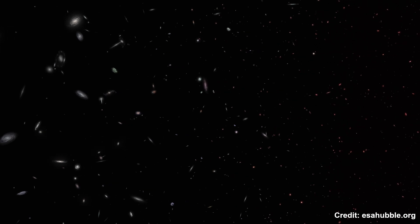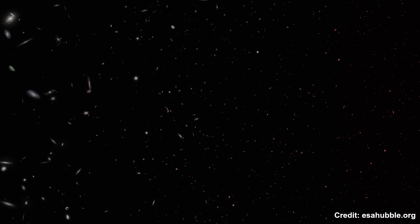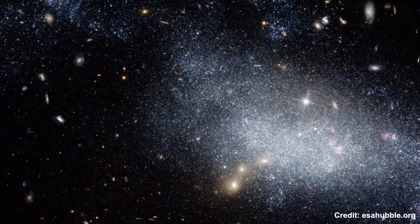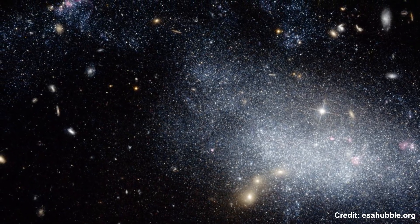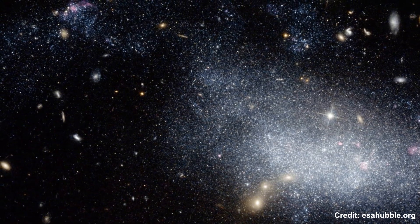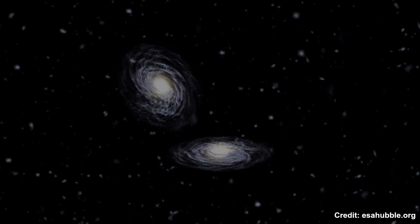The galaxies themselves are not evenly spread throughout the universe. They form clusters and superclusters, connected by vast cosmic filaments, creating a web-like structure that stretches across space. This cosmic web is the scaffolding of the universe, with galaxies scattered along its threads, leaving immense voids in between.